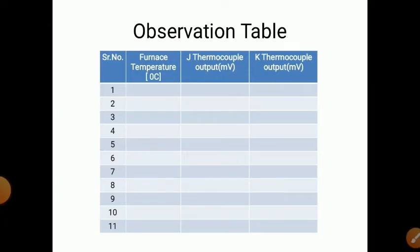The observation table has two columns: furnace temperature in degrees Celsius, and thermocouple output in millivolts for J type and K type. As temperature increases, voltage also increases. Readings are taken at 10-degree Celsius intervals — at 10, 20, 30, 40, 50, 60 up to 100 degrees Celsius — noting voltage for both J and K type thermocouples.